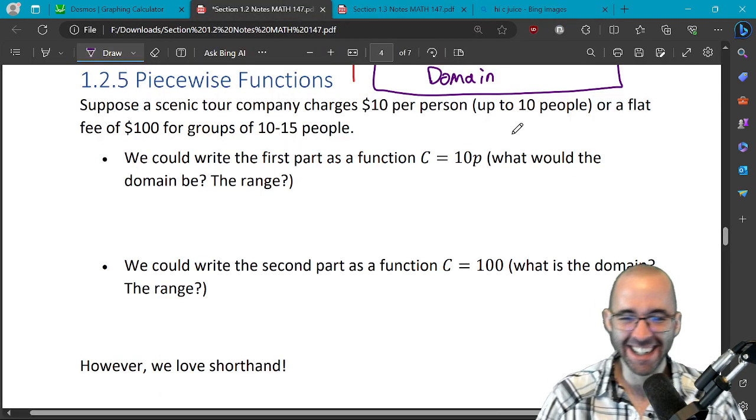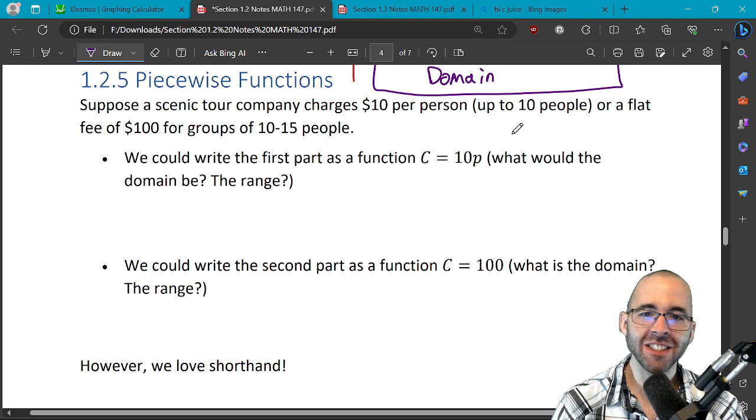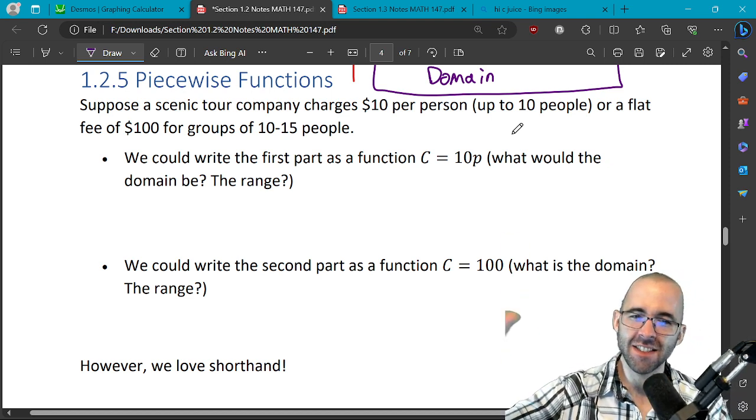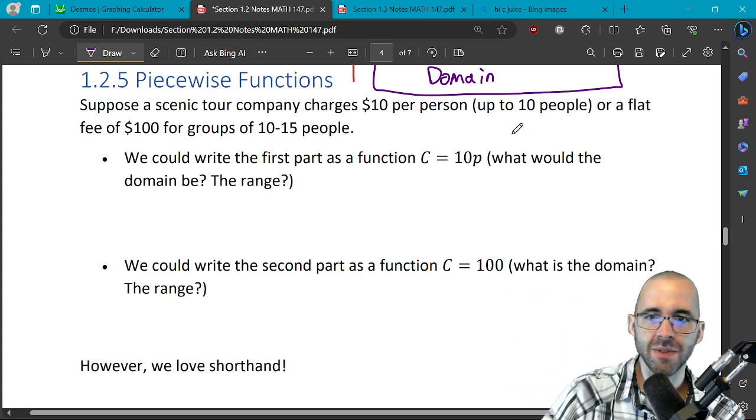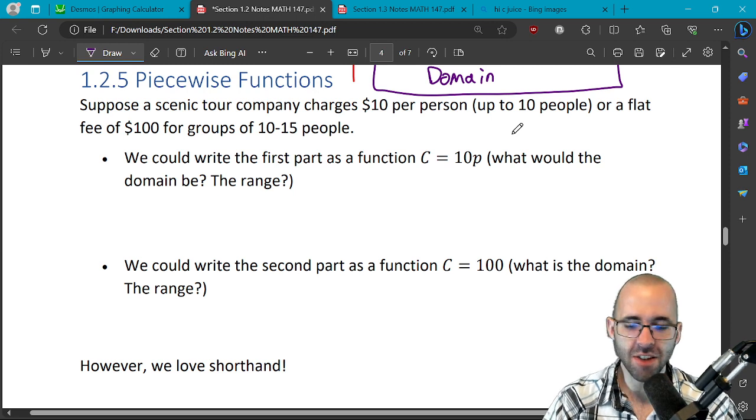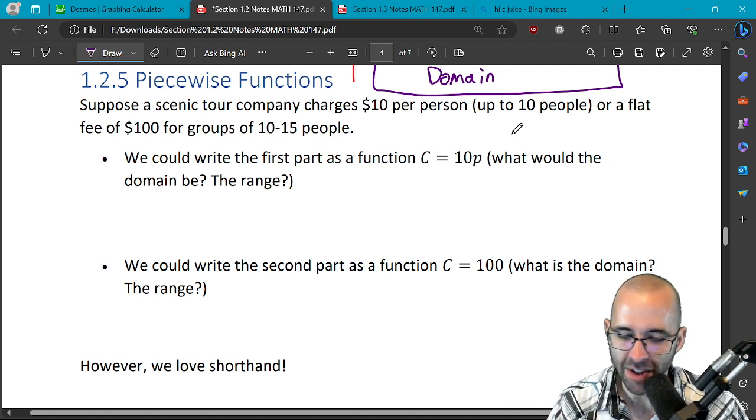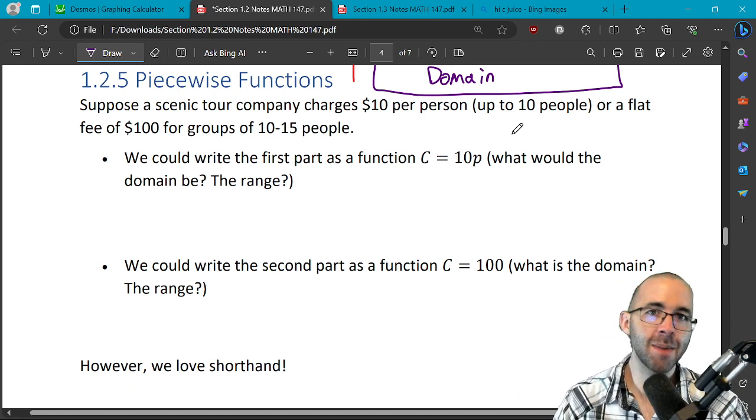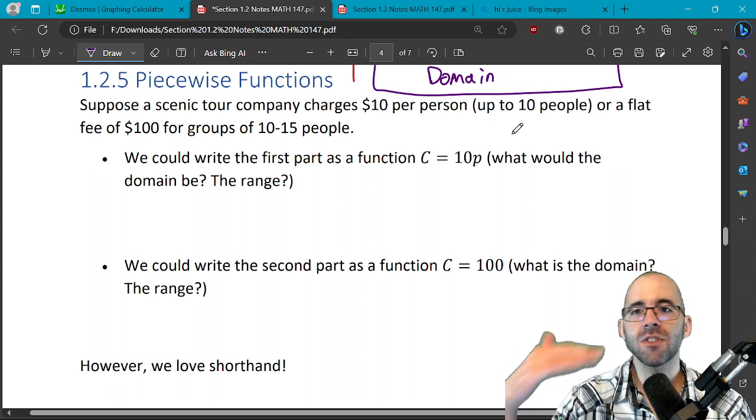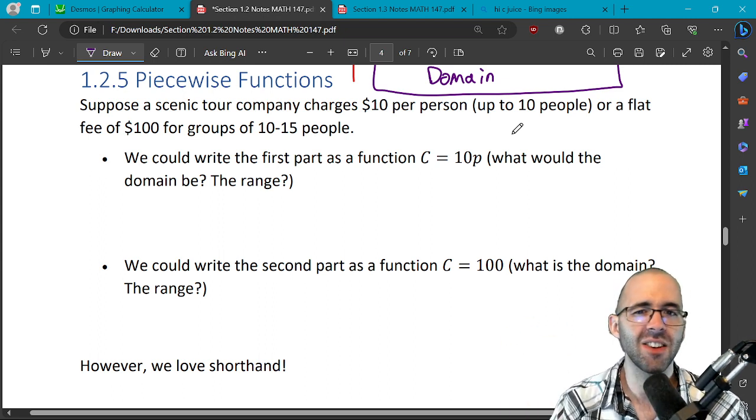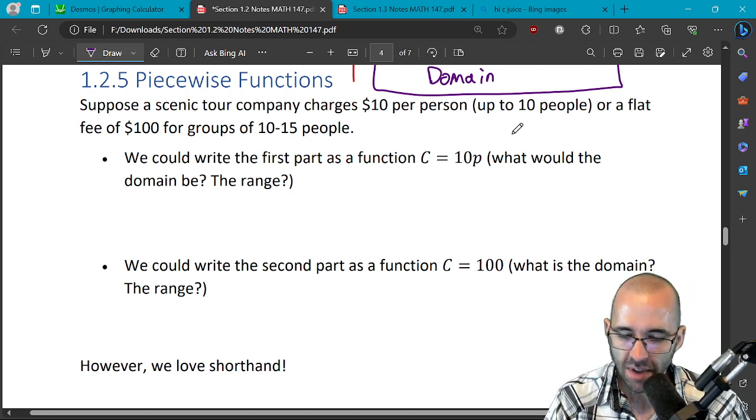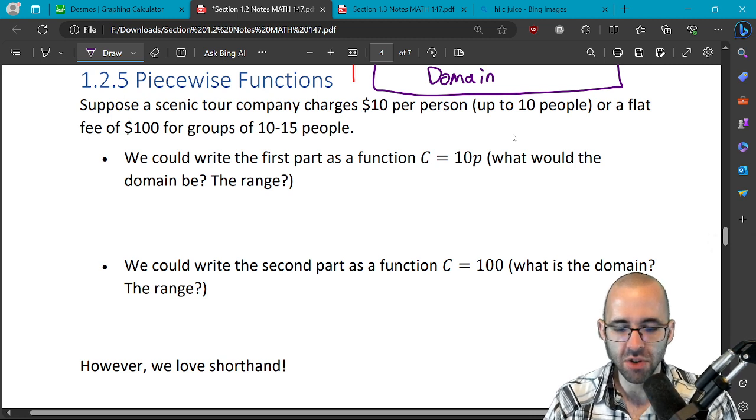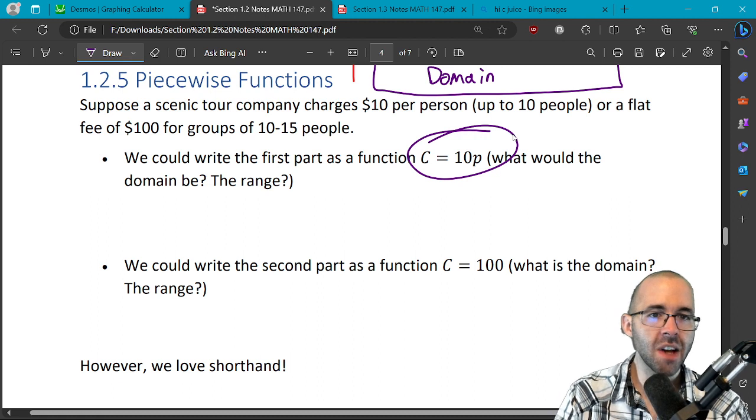Okay, so we're gonna talk about piecewise functions, but not yet. These next two videos are a little squirrely sometimes, but they're really important. Let's start with an example. Say we got a scenic tour company, they charge ten dollars per person up to 10 people, and if you have 10 to 15 people they'll just charge you a flat fee of 100. So you get a discount if you have more than 10 people.